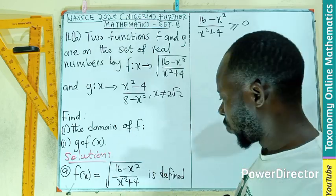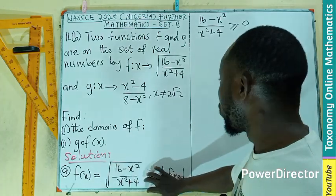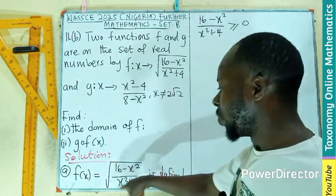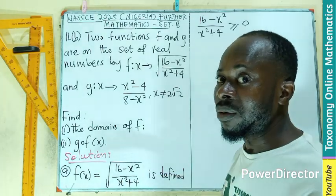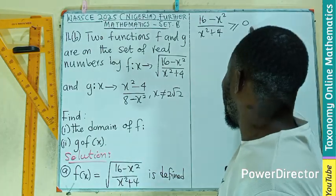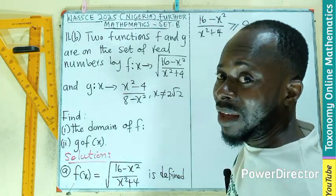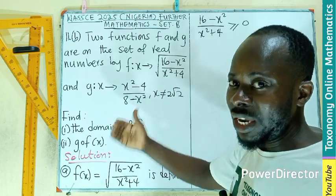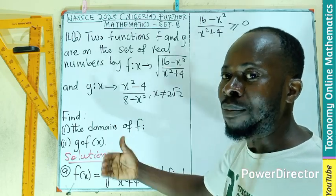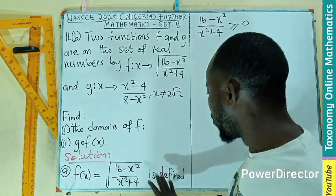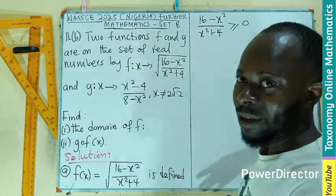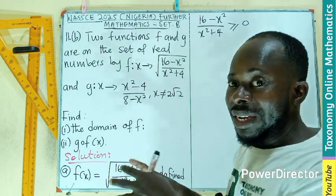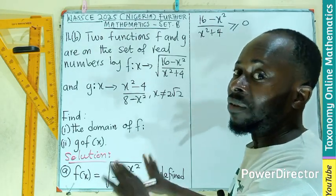We don't want a negative value under the square root. If everything under the square root equals zero, then the square root of zero is zero, which is real. All values greater than zero will also make this defined. We are looking for the domain — those values that make this function defined.